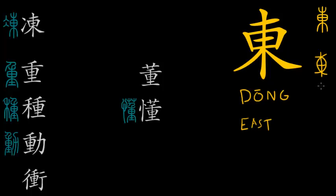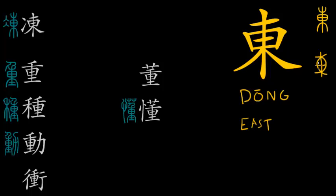These oracle bone script characters can be dated back roughly to 700 BC and earlier. When the character evolved into seal script — which was codified as the official script of the Chinese empire around 200 BC, at least 500 years later — it was slightly rewritten and completely rearranged in its structure. The seal script has much more structure than the oracle bone script, with components that can be isolated and are strictly separated.